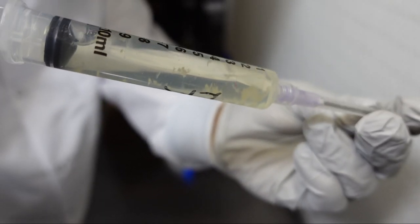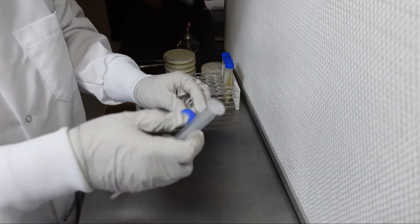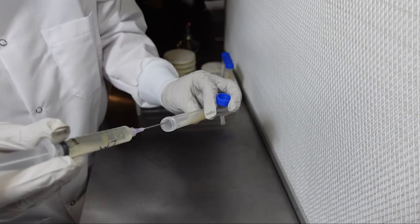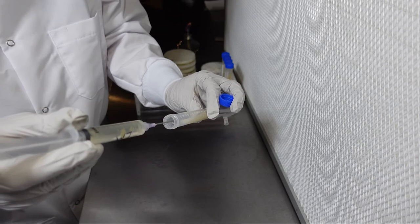You can also inoculate slants with liquid culture by simply flame sterilizing the needle and then squirting just a few drops onto the slant.